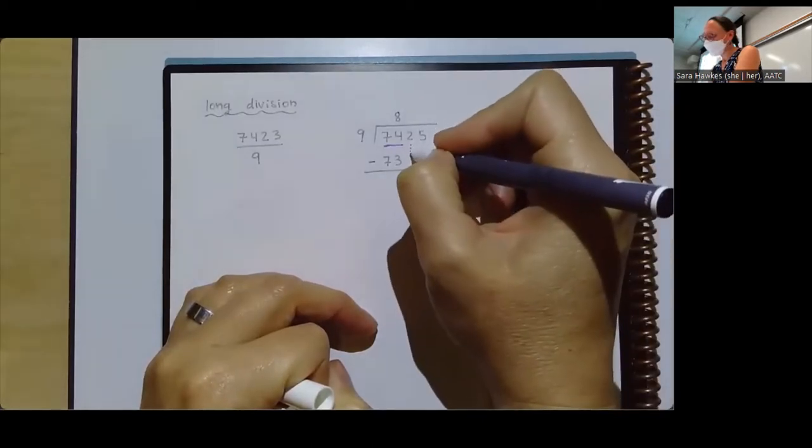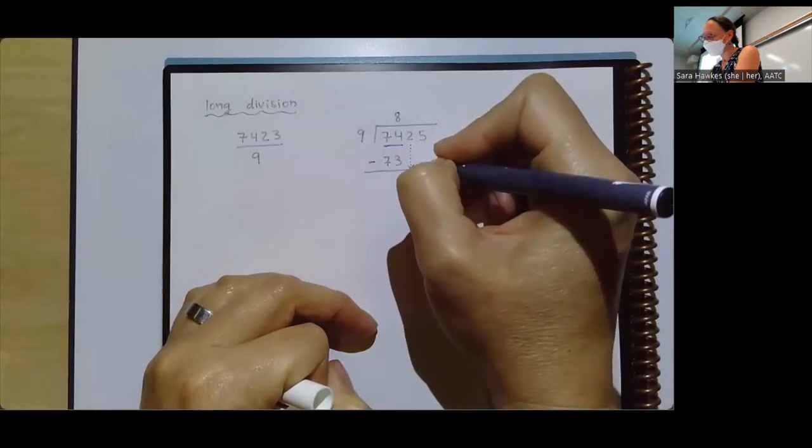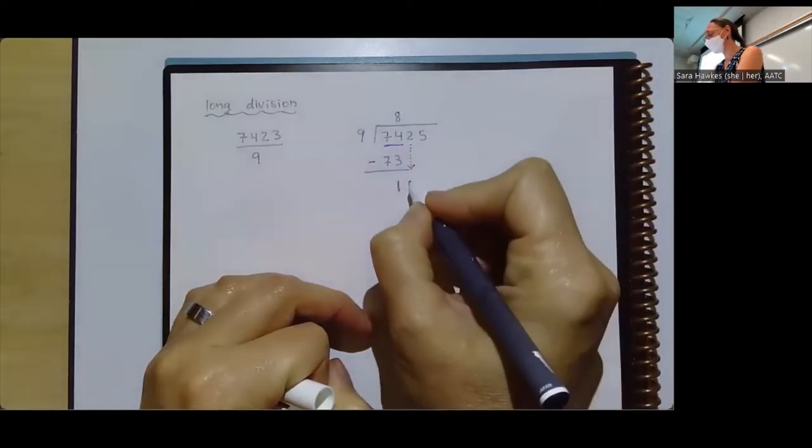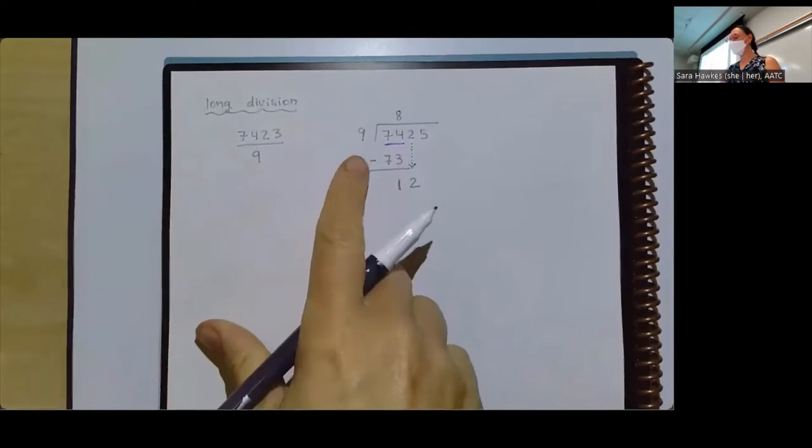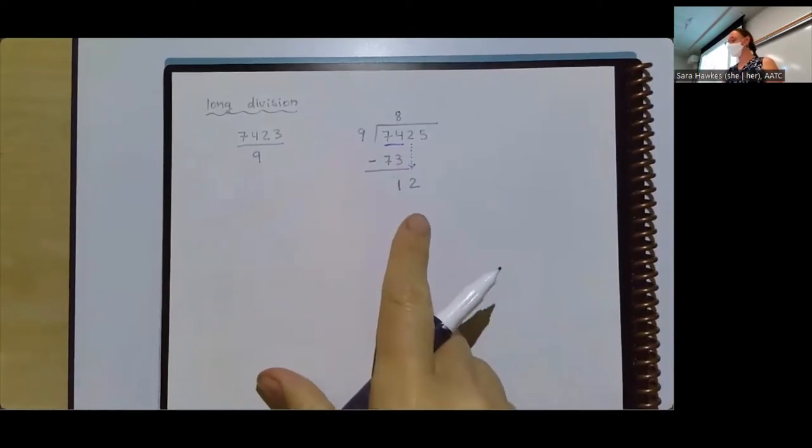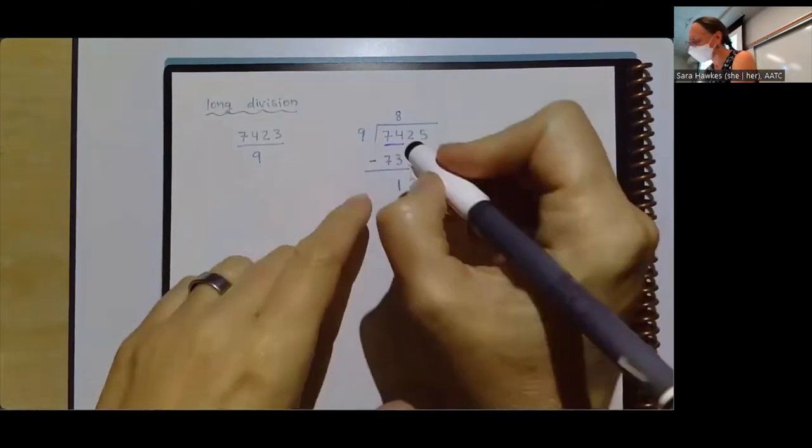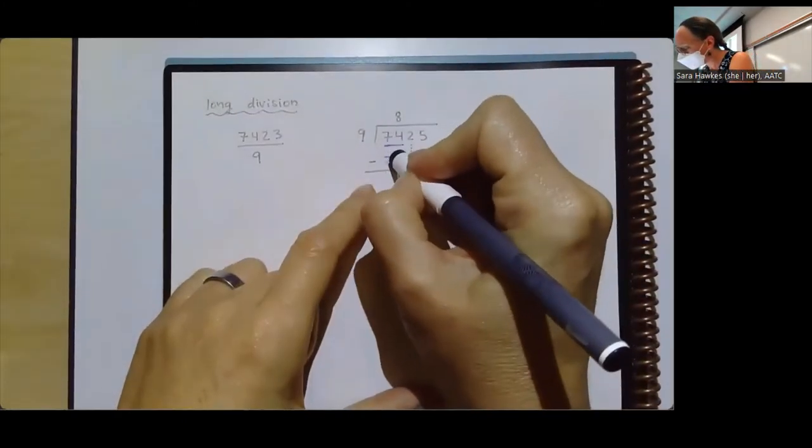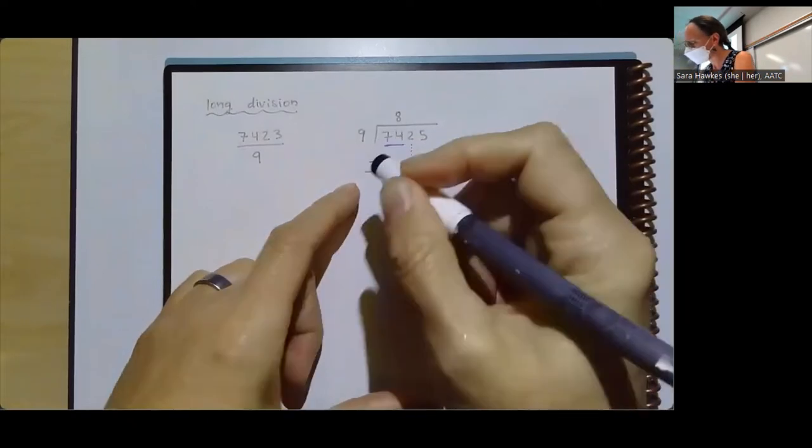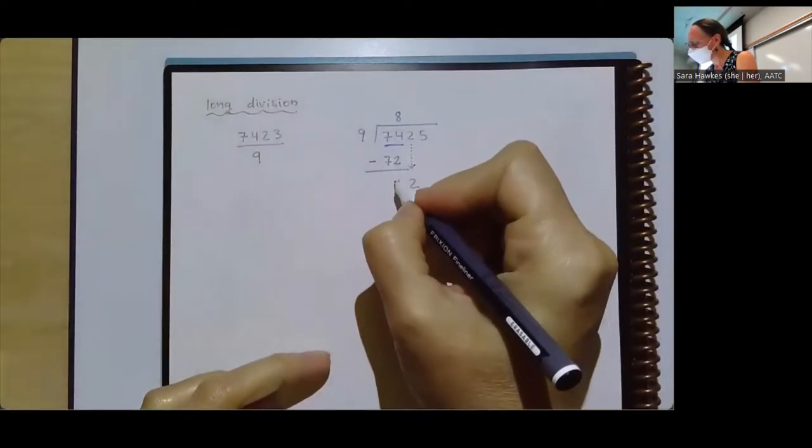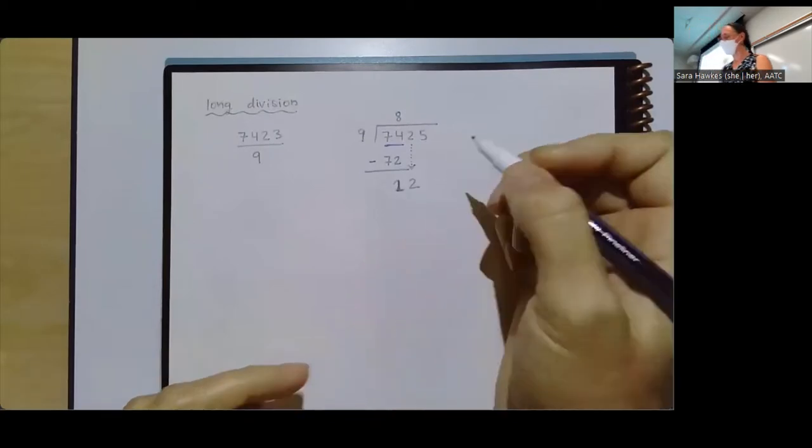And then I'm going to bring down this next term. Now I'm looking at the nine and I'm saying nine times what gets me as close to 12 as possible without going over? Oh, 72. Someone corrected me. Yes, thank you. Nine times eight is in fact 72, which would make that a two.